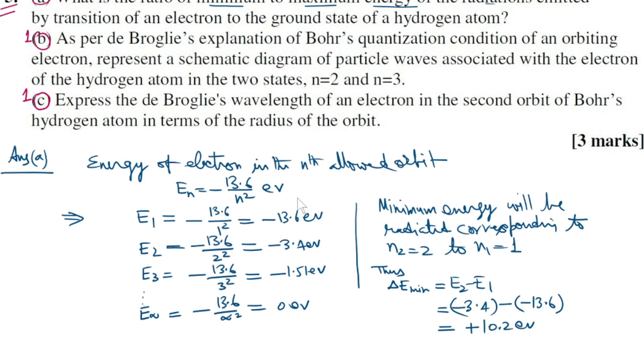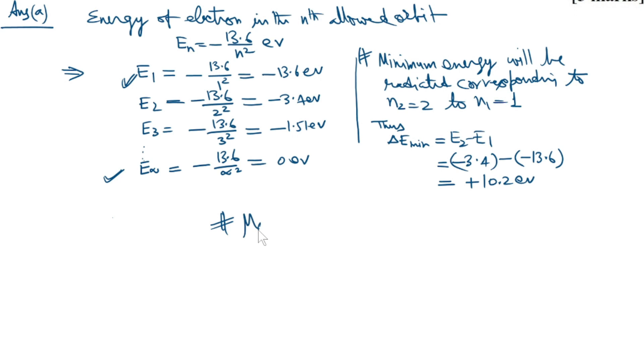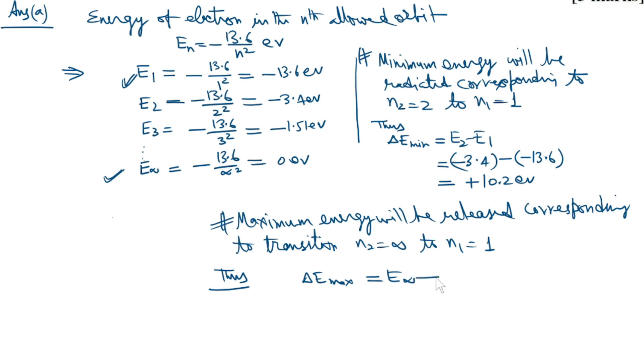Maximum energy will be released corresponding to the transition from n equals infinity to n equals 1. Thus, delta E max equals E infinity minus E1, which equals 0 minus minus 13.6, equals plus 13.6 electron volts.